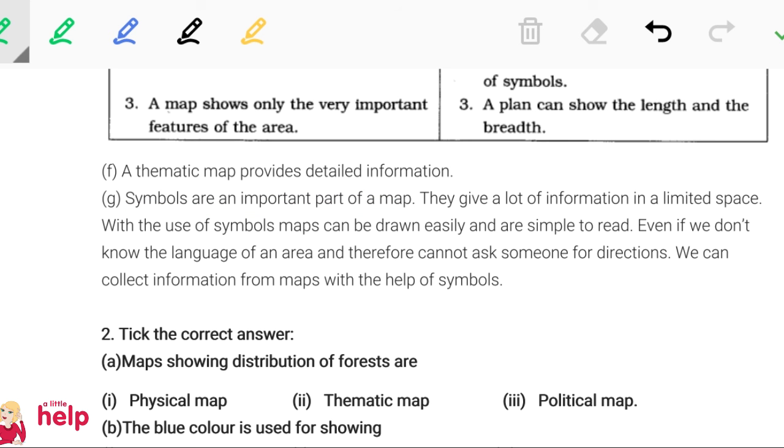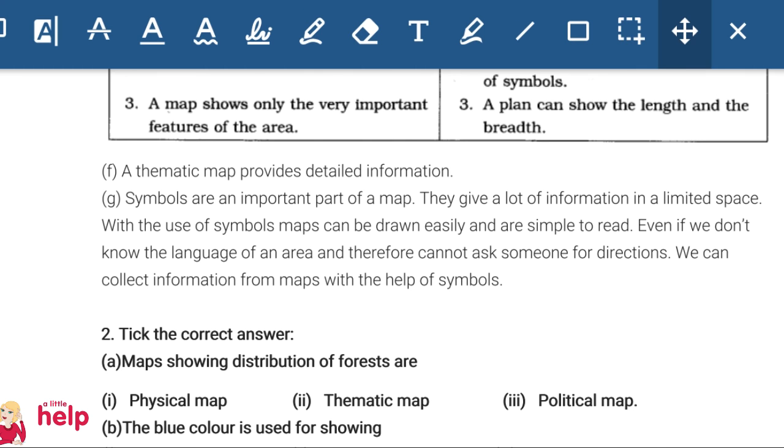Let's read one more time. Symbols are an important part of a map. They give a lot of information in a limited space. With the use of symbols, maps can be drawn easily and are simple to read. Even if we do not know the language of an area and therefore cannot ask someone for directions, we can collect information from maps with the help of symbols. Okay students, let's get started. Tick the correct answer.